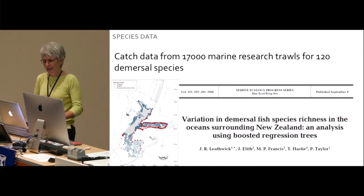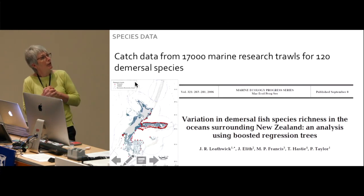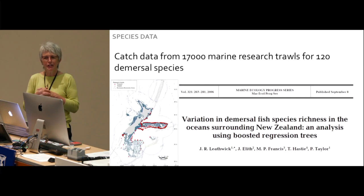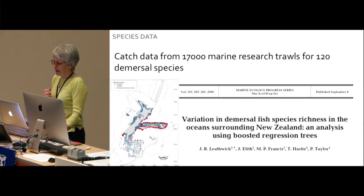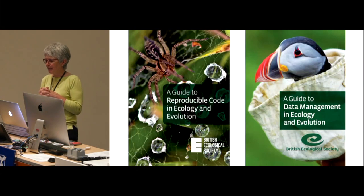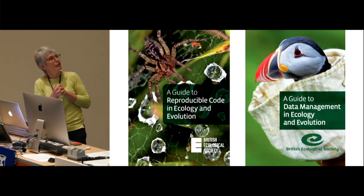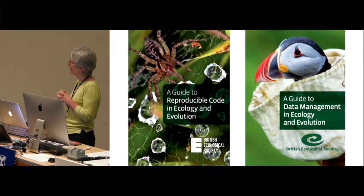We also have large data sets, like 17,000 marine research trawls I work on with my colleague John Leithwick in New Zealand. Traditionally these data were owned by ecologists or management agencies and not openly available. But open data and reproducible code are now becoming more mainstream. The British Ecological Society provides examples, and we're thinking of ways to reward ecologists who collect data to give them incentives to make it available to others.